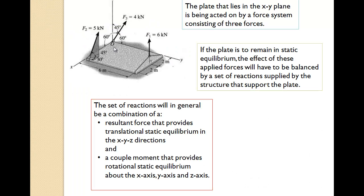The plate is lying in the XY plane and is being acted on by force system F1, F2, and F3. For the plate to remain in static equilibrium, there has to be a support. If we imagine the support is at the origin, that reaction support will provide translational static equilibrium in the XYZ directions — a resultant reaction force — and a couple moment providing static equilibrium around the three axes. A typical rigid body has six degrees of freedom, three translational and three rotational, and the reaction set at the support provides stability about all six.